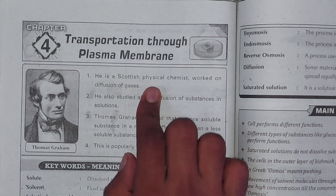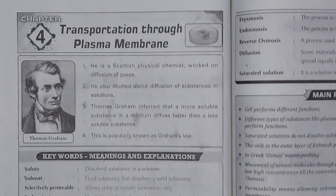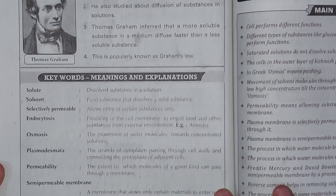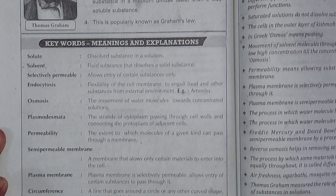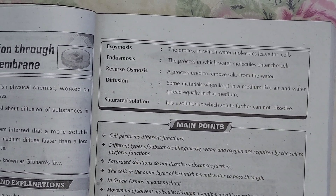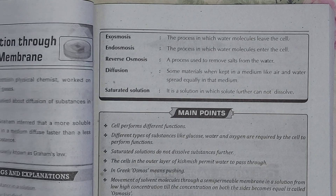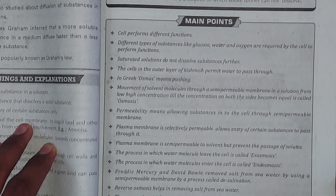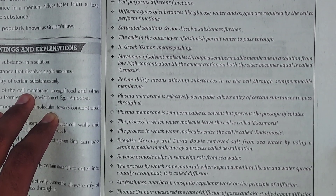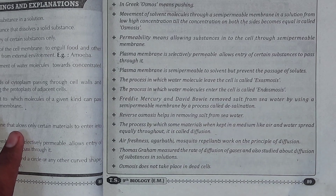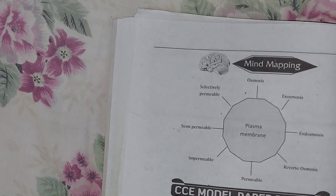Chapter 4: Transportation Through Plasma Membrane. First we will see keywords, their meaning and explanation. After that we have your main points, and then we have your main mapping section.